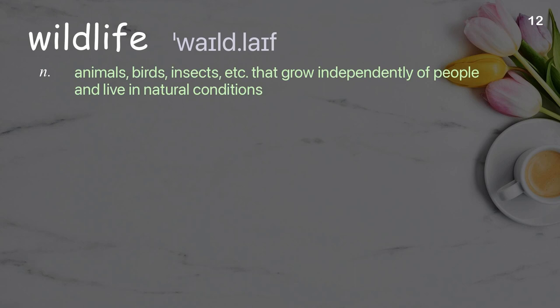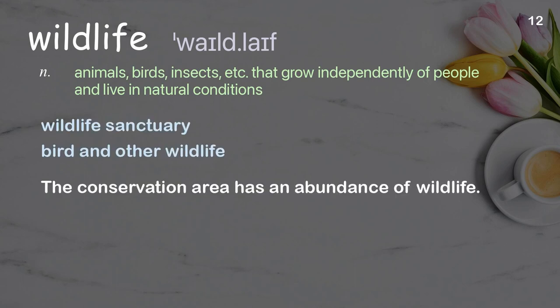Wildlife: Animals, birds, insects, etc. that grow independently of people and live in natural conditions. Examples: Wildlife sanctuary, birds and other wildlife. The conservation area has an abundance of wildlife.